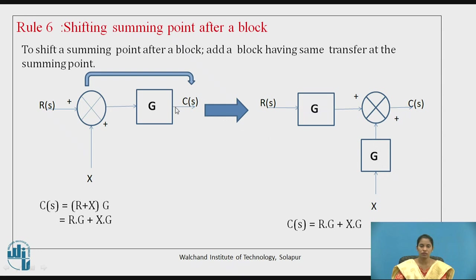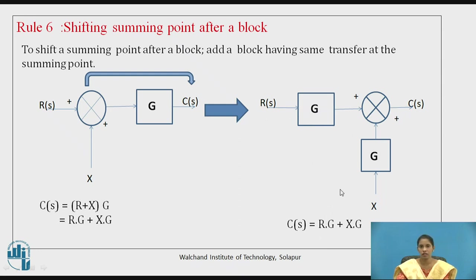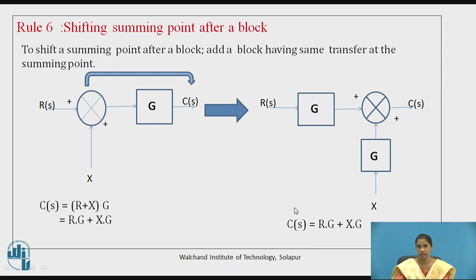The output of this is (R + X)·G, that is R plus X times the gain of the block. The output C(s) is X·G plus R·G, which is the same. The output obtained before and after the shifting procedure is the same, so we achieve our requirement without changing the output. This is rule number 6, where we shift a summing point after a block.